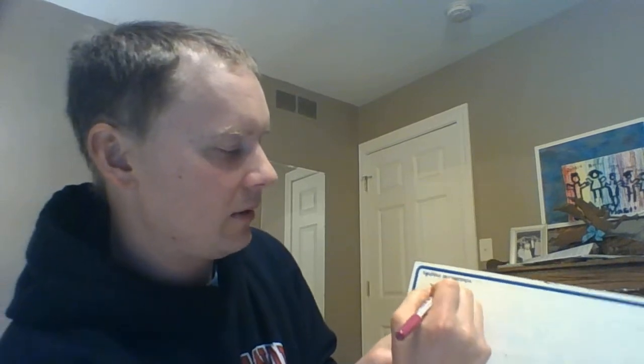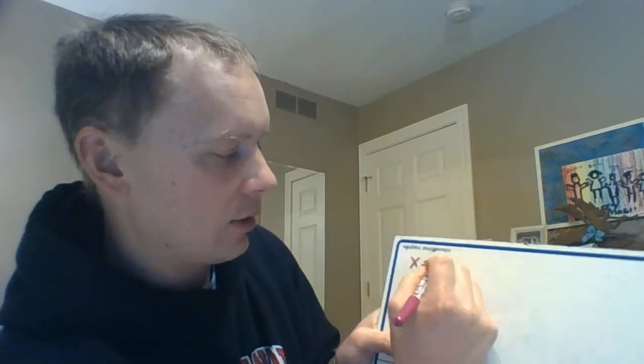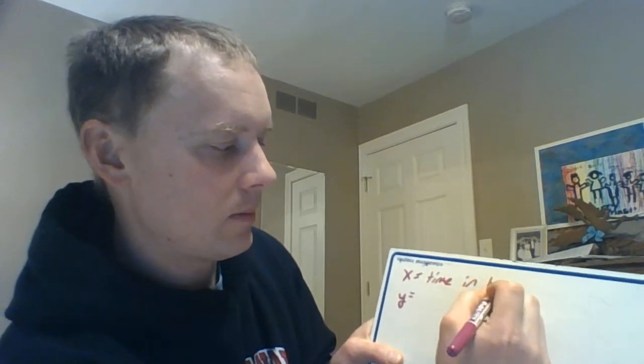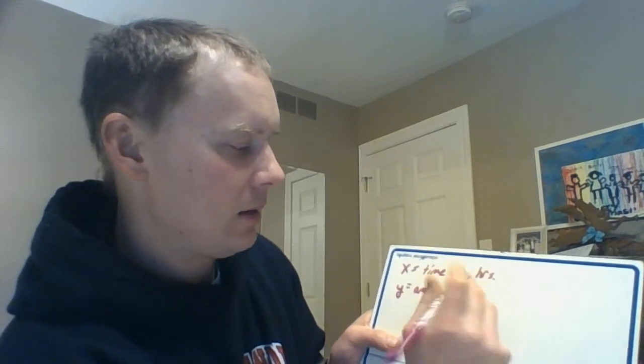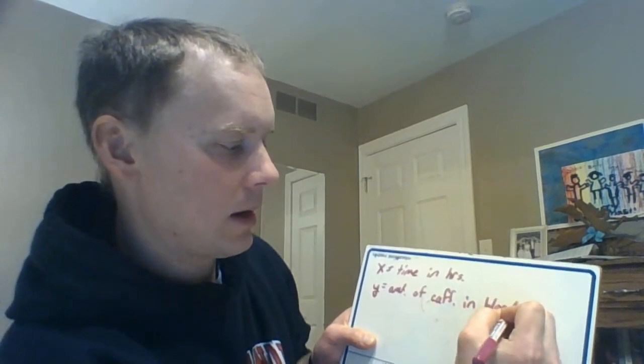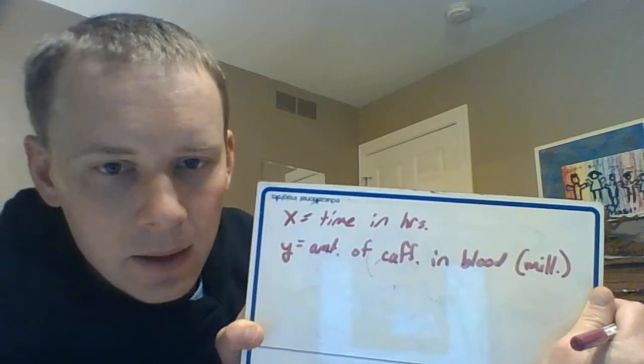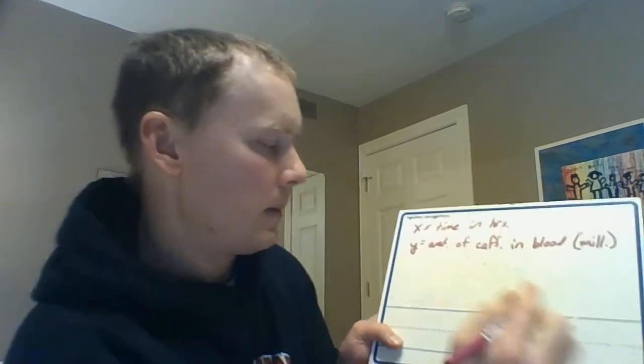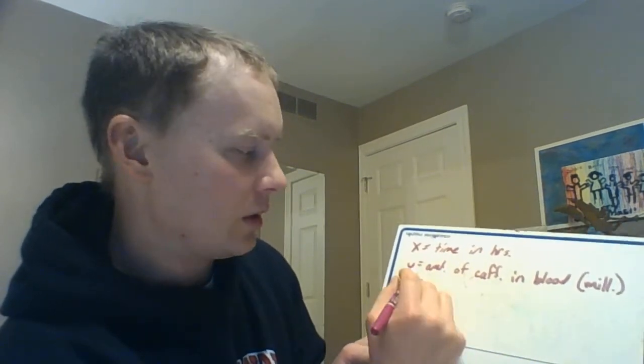Here's what we're going to do. We're going to try and come up with that exponential function. So the first thing we need to do is establish what x equals and what y equals in our situation. x is our time in hours, and y is equal to the amount of caffeine in your blood, and that's going to be measured in milligrams. That's what we got to define our variables.